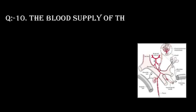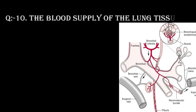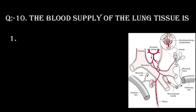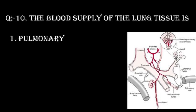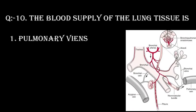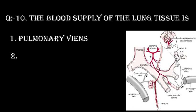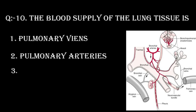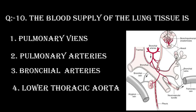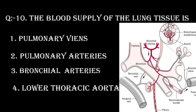Question number 10. The blood supply of the lung tissue is. Option 1: Pulmonary veins. Option 2: Pulmonary arteries. Option 3: Bronchial arteries. Option 4: Lower thoracic aorta.